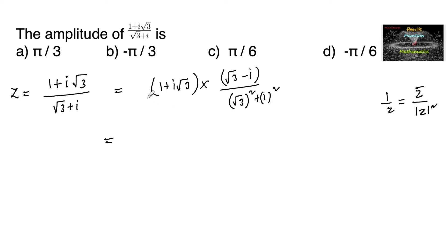Which is equal to 1 plus i root 3 into root 3 minus i upon root 3 whole square is 3 plus 1, that is 4.